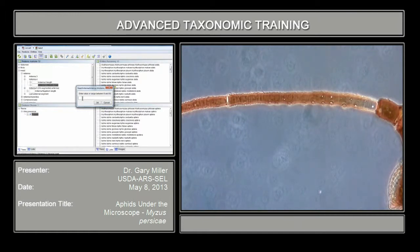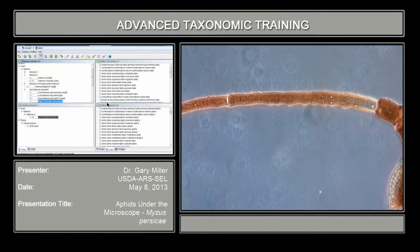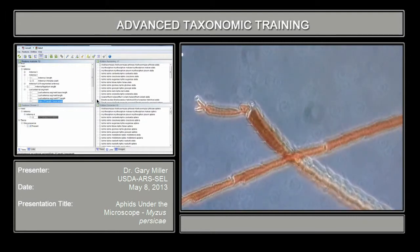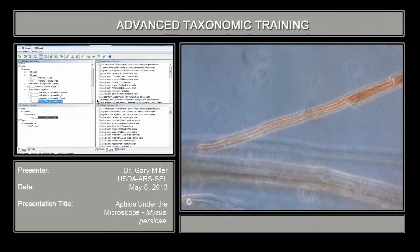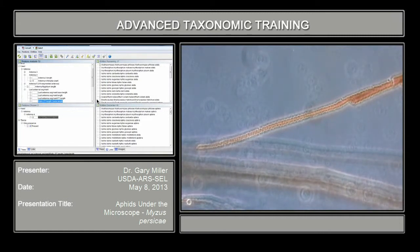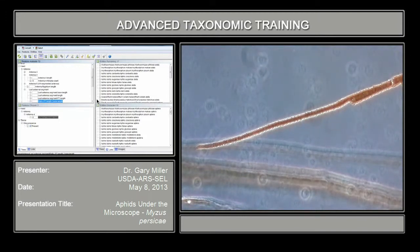So we're going to add our value of 0 and OK it. Now again, we're at the process terminalis length and base length, so we're going to make a measurement here. One of the things you want to keep in mind is that you want to make sure that the terminal process has CD on the end, because that makes it clear that that is the end of the terminal process.